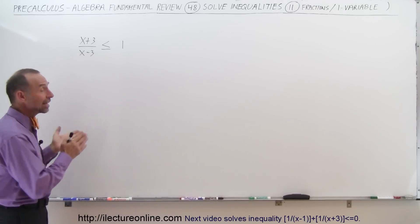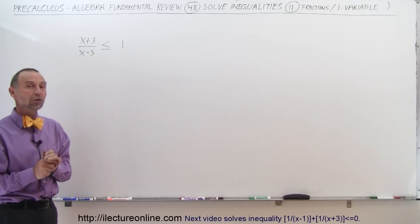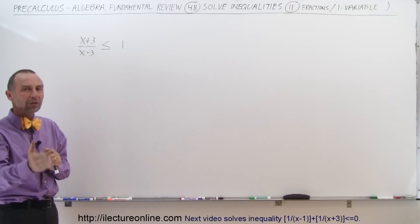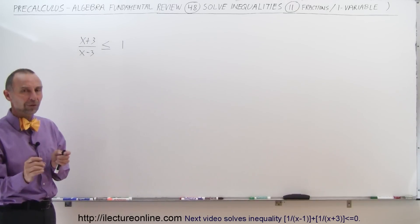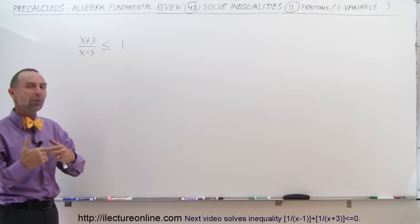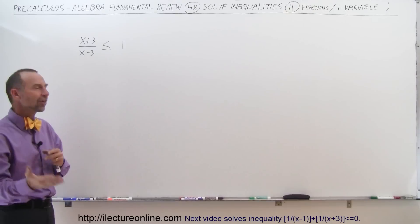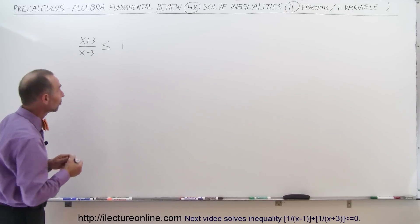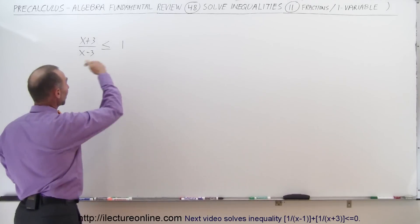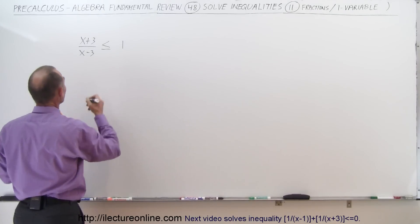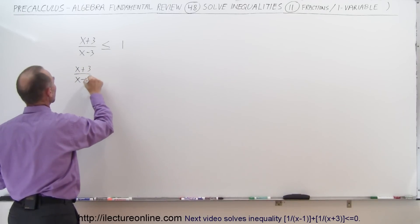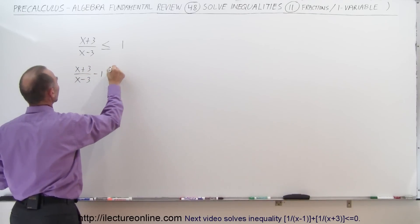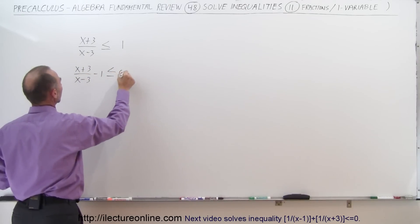The tendency is to try to work it out as-is, but what you want to do is move the 1 to the left side and turn the right side into 0, because you always want a 0 on the right side and everything else on the left. So we get x plus 3 divided by x minus 3 minus 1, less than or equal to 0.